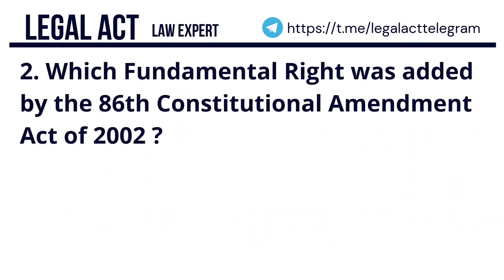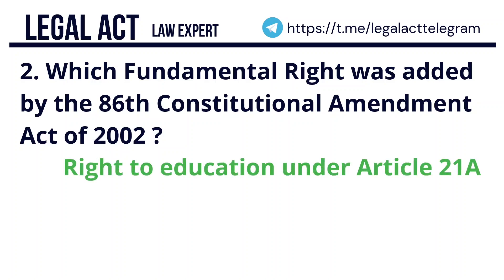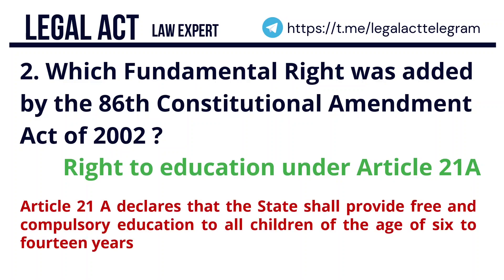Question 2: Which fundamental right was added by the 86th Constitutional Amendment Act of 2002? The answer is Right to Education under Article 21A. Article 21A declares that the state shall provide free and compulsory education to all children of the age of 6 to 14 years.